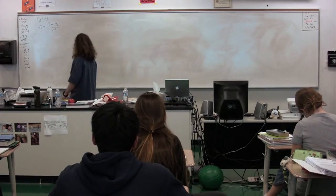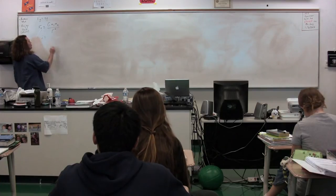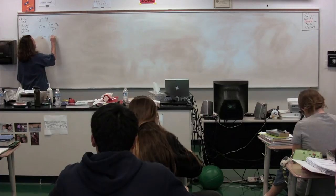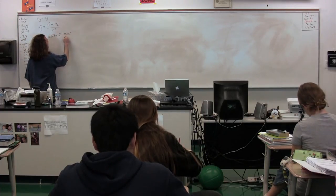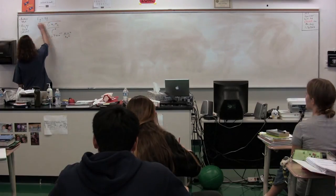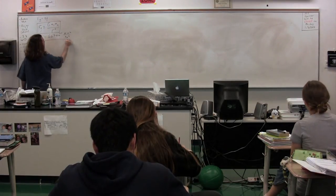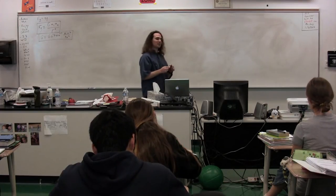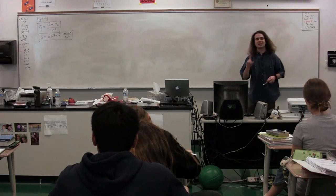Now, the way this works is we have big G. Big G is the universal gravitational constant. It has a value of 6.67 times 10 to the negative 11 newtons times meters squared divided by kilograms squared. Both of these items are boxed — big G is also boxed.